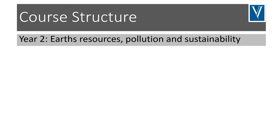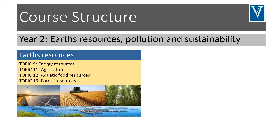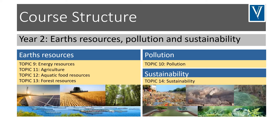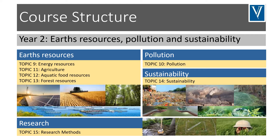Then, in the second year, you'll learn about the Earth's resources, pollution, and sustainability. For Earth's resources, we're looking at energy, agriculture, and food resources from the aquatic system as well as from the forest. We'll look at pollution across all the different areas — water pollution, air pollution, pollution on land. We'll also look at sustainability: how can we build more sustainable practices into the way we utilise the Earth's resources? And we'll underpin it all by studying research methods — how can we understand the environment better by doing research in the correct way?